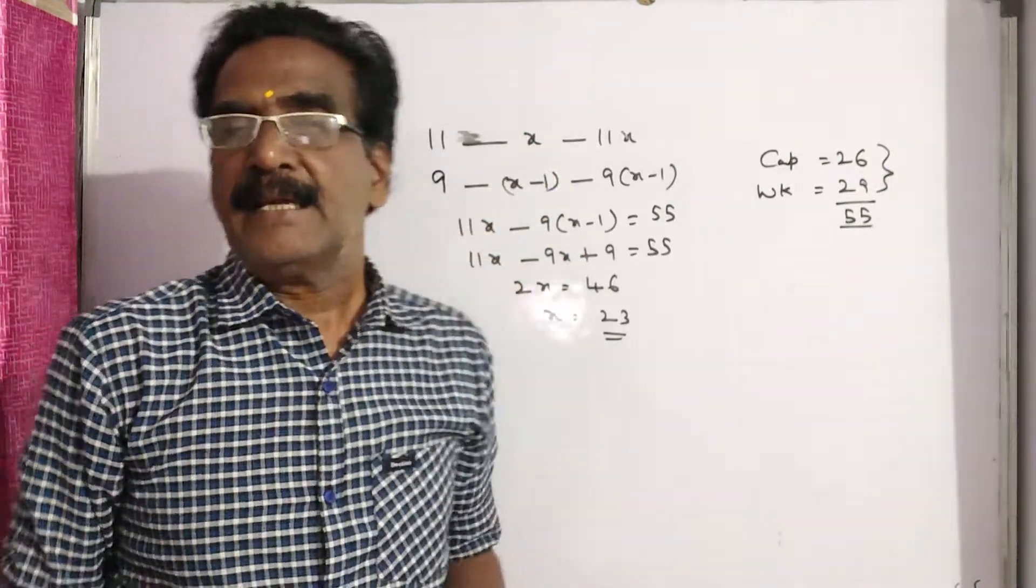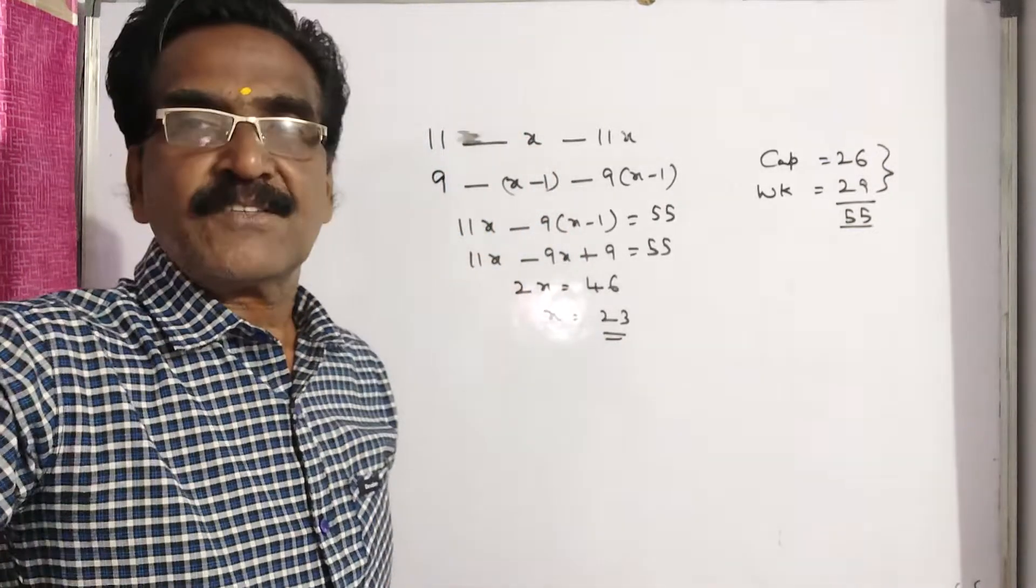We want the average of the cricket team. Your answer is 23 friends.